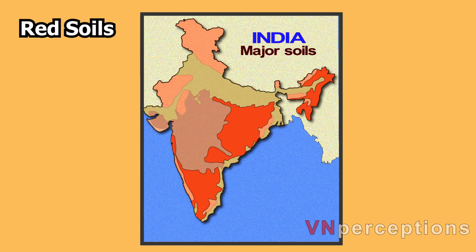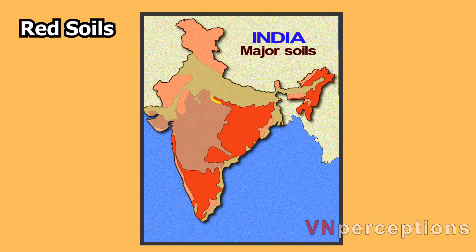Red soil covers the states of Karnataka, Kerala, Tamil Nadu, Andhra Pradesh, Telangana, Odisha, Chhattisgarh, Jharkhand and the northeastern states. If you look carefully, they practically encircle the entire black soil region on all sides.